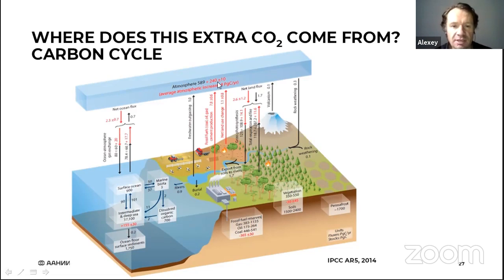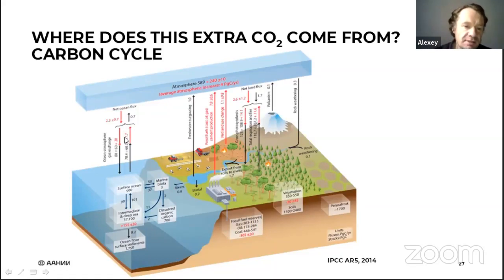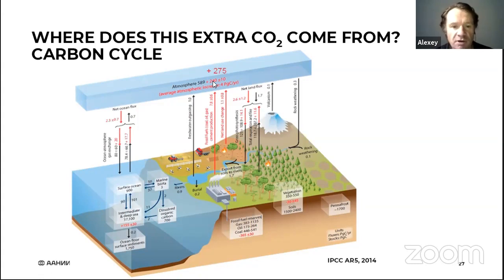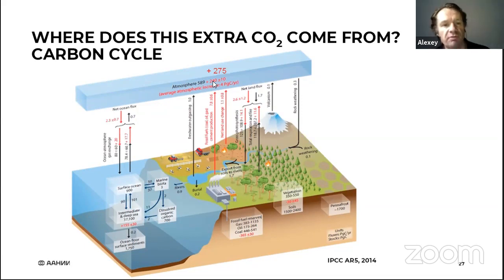This extra carbon started to circulate in natural loops — extra carbon is absorbed by plants and dissolved in the ocean — but nature cannot digest all the carbon we introduced because we introduced just too much. Some carbon is accumulating in the atmosphere. Over the past 150 years, about 275 billion tons of carbon has accumulated in the atmosphere due to human activity.